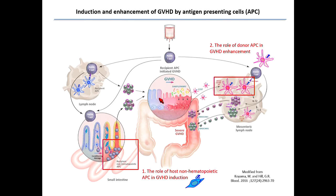Today's first half of my talk is about the role of the host non-hematopoietic APCs in GvHD induction. The T-cell is presented antigen, proliferates, and then differentiates to TH1 or TH17, and they start damage of the organs. In parallel, the donor APCs — the hematopoietic APCs — once tissue damage starts, especially in the colon, the donor dendritic cells are stimulated to proliferate and activate via the damage- or pathogen-associated molecular patterns, which are the innate signals coming to the damaged tissue.